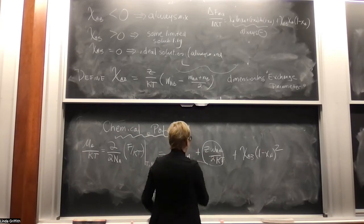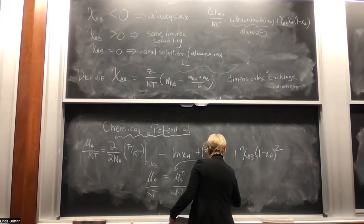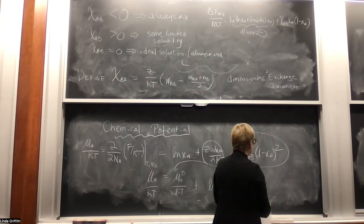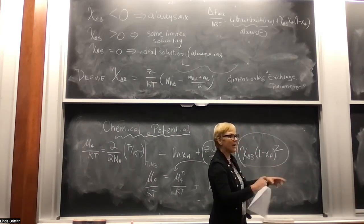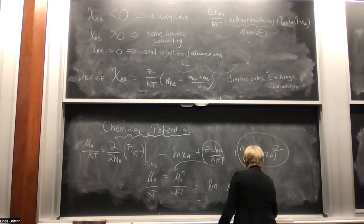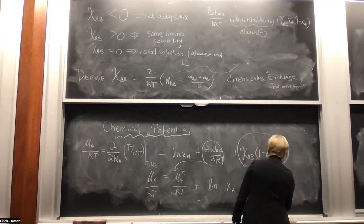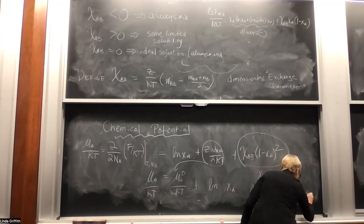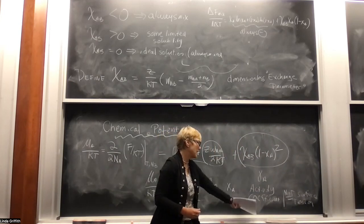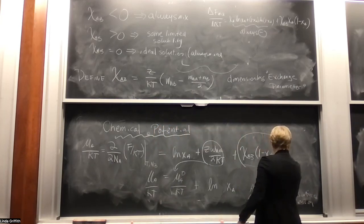We define the activity coefficient gamma as e to the power [chi_ab times (1 minus x_a) squared]. Note: this gamma is the activity coefficient — not the surface tension, even though the book unfortunately uses gamma for both. An ideal mixture has gamma = 1. This gamma captures the non-ideality of the AB interactions.